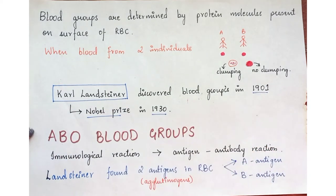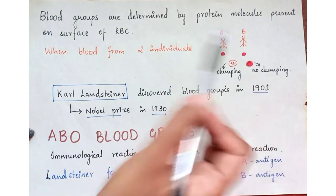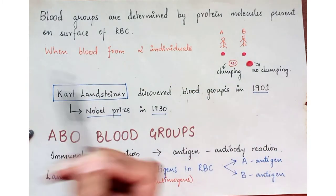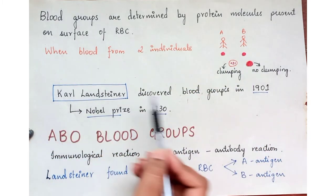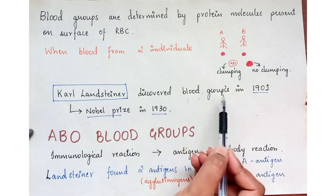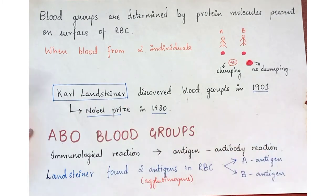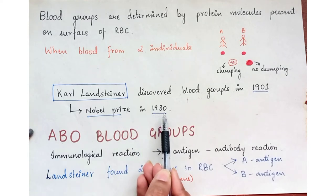This was discovered first by Karl Landsteiner, who discovered blood groups in 1901. He also won a Nobel Prize in 1930.